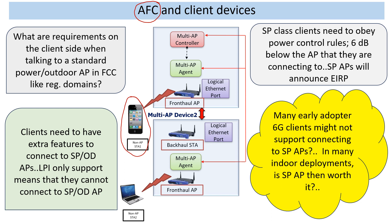For example, there is no strict minus 1 dBm per megahertz in an FCC-like domain for the clients. Clients need to have power control implemented. They have to operate 6 dB below the AP, which means that if your AP is operating at 24 dBm, a client cannot exceed 18 dBm.